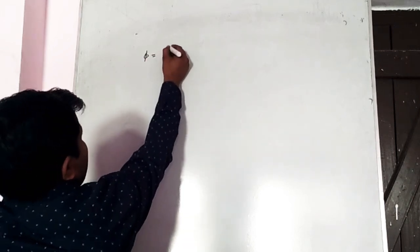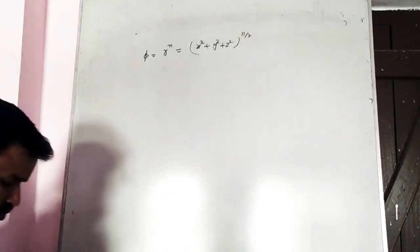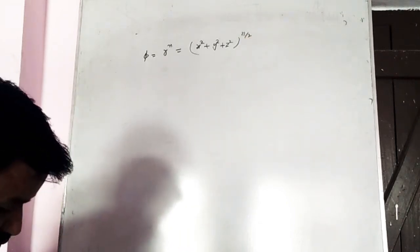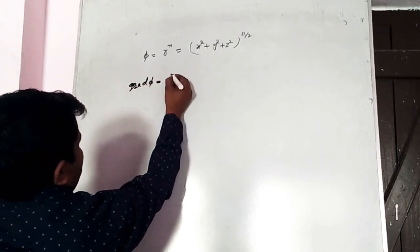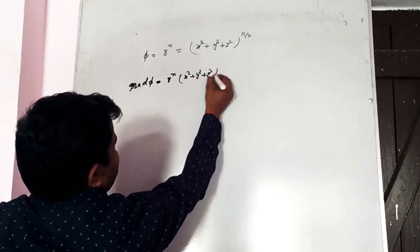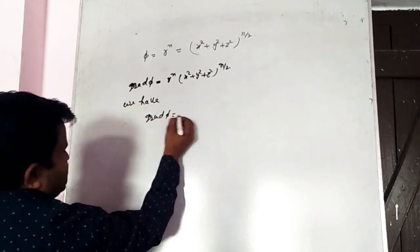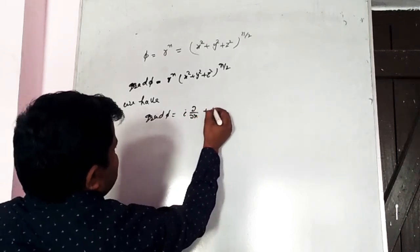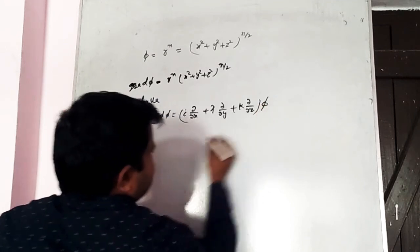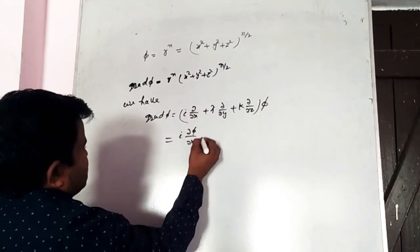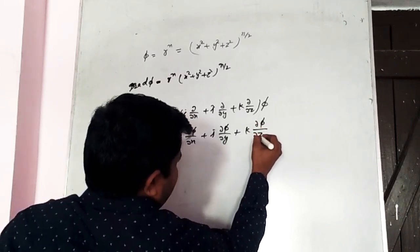Next problem: φ = r^n = (x² + y² + z²)^(n/2). Find grad φ. We have grad φ = (i ∂/∂x + j ∂/∂y + k ∂/∂z) φ = i ∂φ/∂x + j ∂φ/∂y + k ∂φ/∂z.